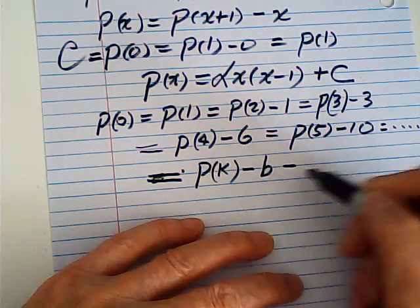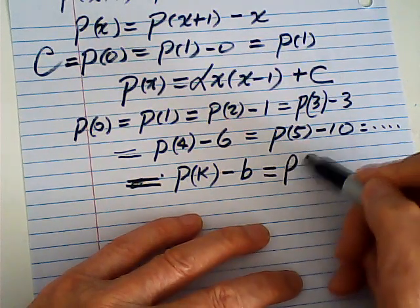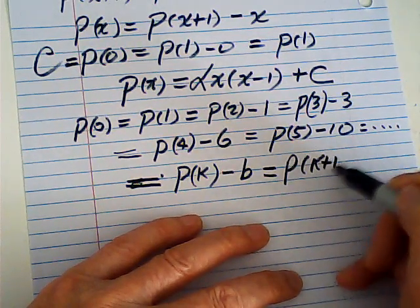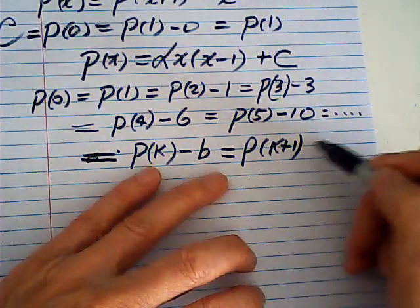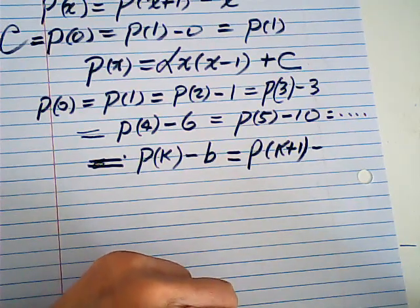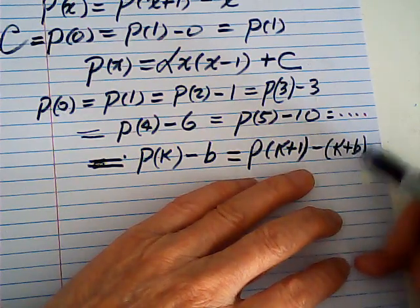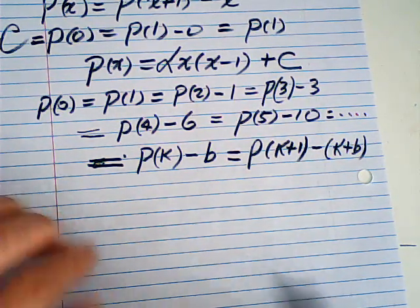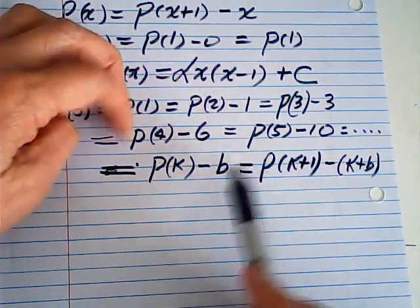Then, this is B here. Then the next one will be P(K+1) minus (K+B). If this is 2, 2 plus 1 is 3.